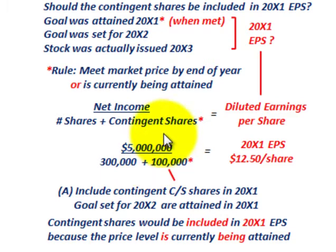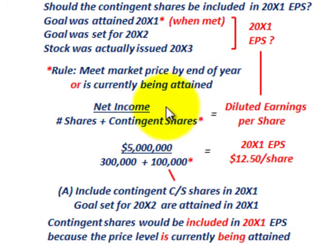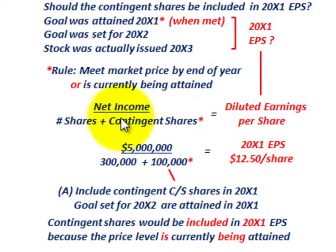That's a summary of what's going on when we're talking about contingent stock issues. In this case, those contingent shares were the extra shares to be issued to the company being acquired — Corporation B — provided Corporation B met specific goals. The goal was that they had to attain a certain average market price on their common stock in year 20x2, and based on that, Corporation A would issue 100,000 additional shares of common stock to Corporation B's shareholders.